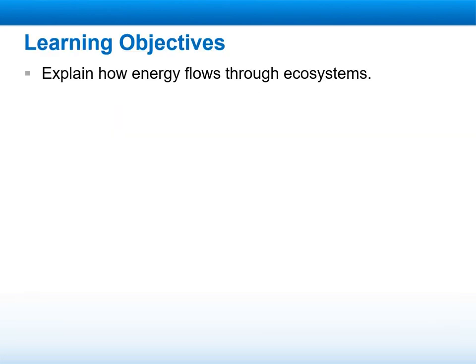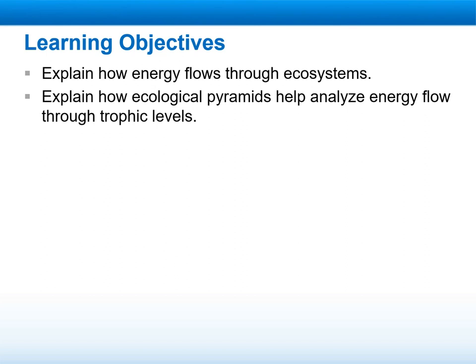Our learning objective for this week: we need to explain how energy flows through an ecosystem, from the primary producers to the end consumers, and the ecological pyramids — we are talking about the energy flow during an ecosystem, which is the food web and the food chain, and how to analyze the flow of these levels.